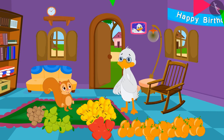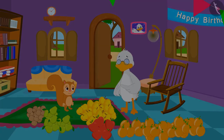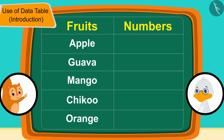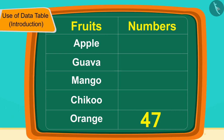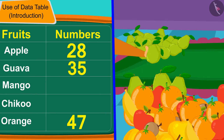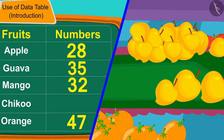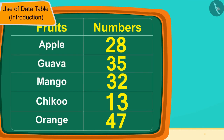Chanda asked uncle, 'Do you remember the number of oranges?' Uncle immediately said 47. Chanda wrote this number in front of 'orange' in the table. Uncle and Chanda then once again counted all the fruits and wrote their numbers in the table. The table is finally completely complete.